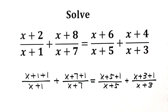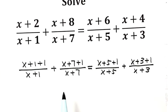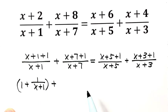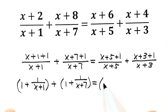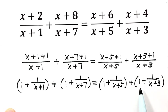The reason we do this is that we can separate each fraction into two parts. The first becomes 1 + 1/(x+1), the second becomes 1 + 1/(x+7), the third becomes 1 + 1/(x+5), and the last one is 1 + 1/(x+3). Now we cancel out the 1s from both sides.